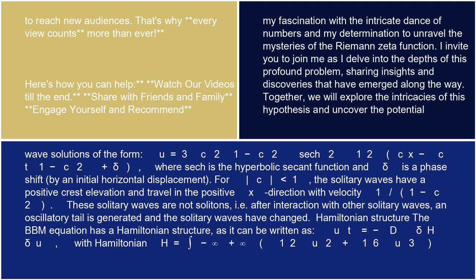u = 3c²/(1-c²) sech²[1/2(cx - ct)/(1-c²) + δ], where sech is the hyperbolic secant function and δ is a phase shift by an initial horizontal displacement.